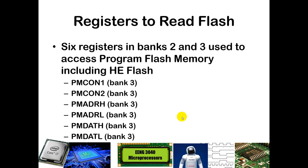The registers associated with reading from or writing to flash memory are all in bank 3. We have PMCON1 and PMCON2, which are program memory configuration registers. Then we have program memory address registers PMADRH and PMADRL, and program memory data registers PMDATH and PMDATL.